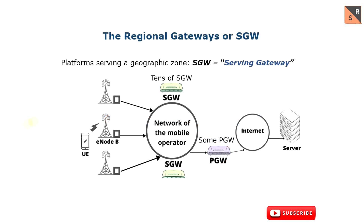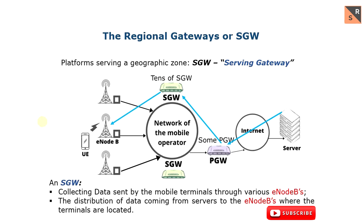This intermediary equipment is called the Serving Gateway, or S-Gateway. The Serving Gateway serves a given geographic zone, typically one region. Now we have an additional hop: from the server to the PGW, from the PGW to the S-Gateway, and from the S-Gateway to the eNB.